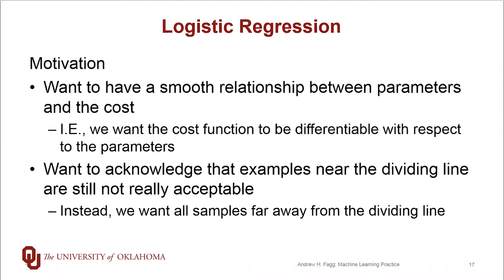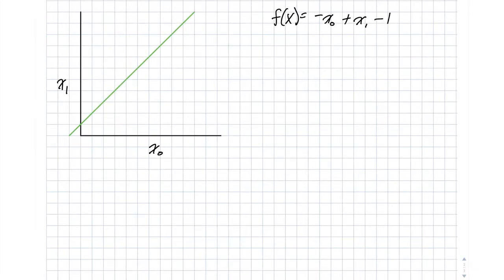Let's do a little bit of motivation first on the drawing side of things before we start talking more about the mathematics. So we have our line that we were looking at before, f of x is minus x0 plus x1 minus 1. And this line here that's in green corresponds to f of x equals 0.